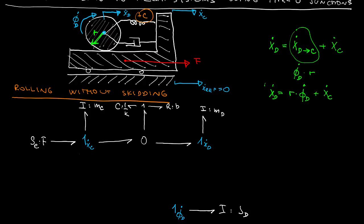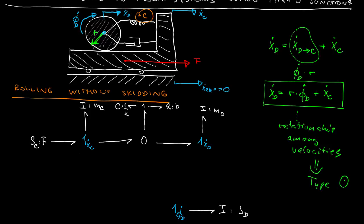Namely that the velocity of the disc is combined from the relative velocity of the disc with respect to the cart and the velocity of the cart which I can encode using a type 0 junction like this.